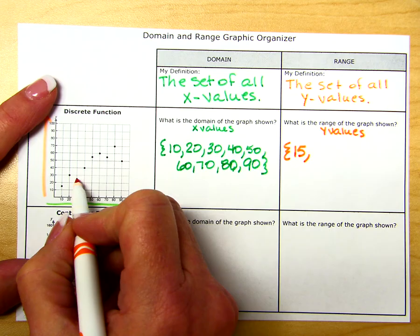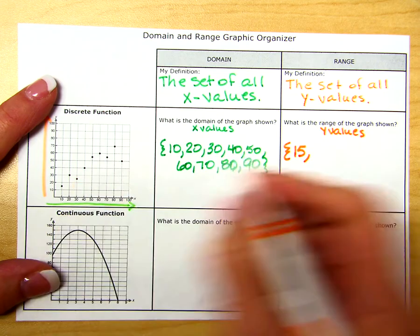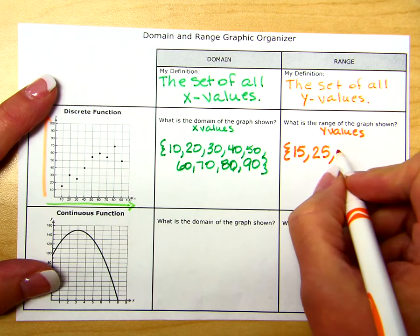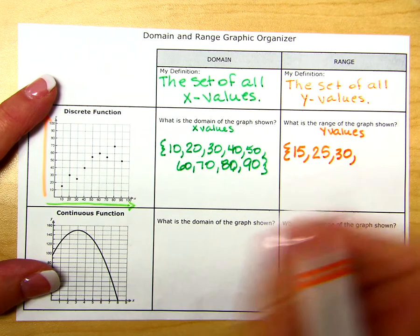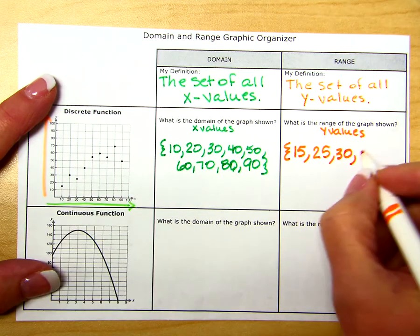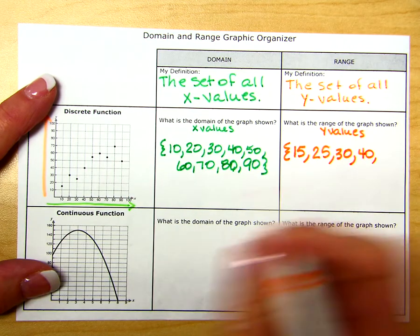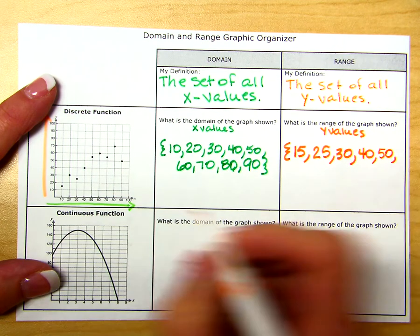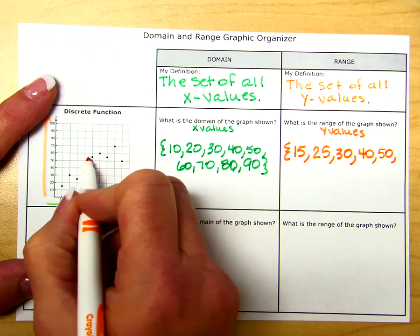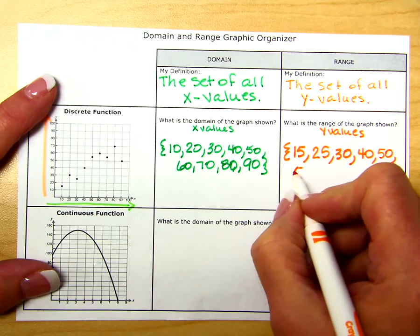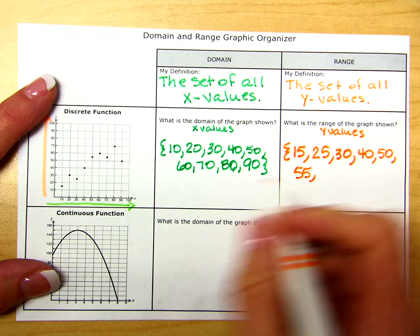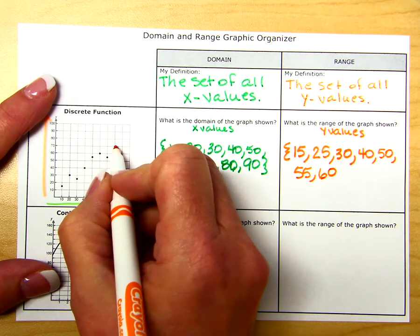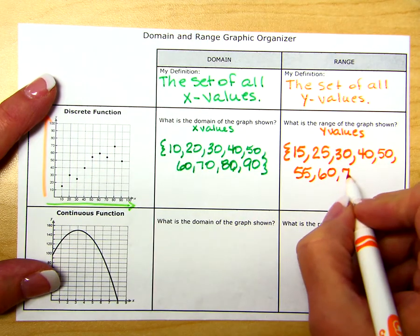This next point as we go up is 25. This point as we go up is 30. This point is 40. The next point is at 50. After 50, we have two points that are at 55, but we only write it down one time. Then we go up to 60, and finally the last point is at a value of 70.